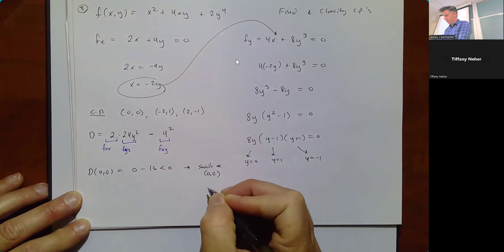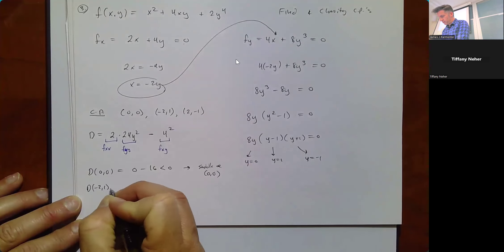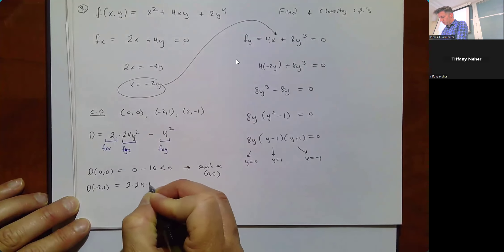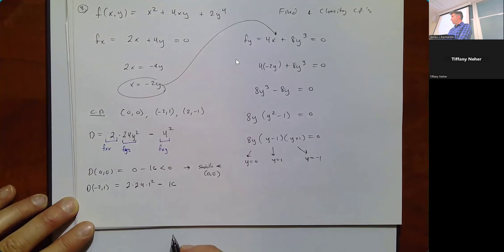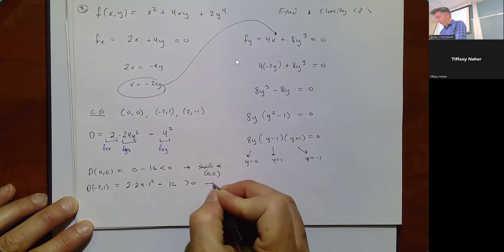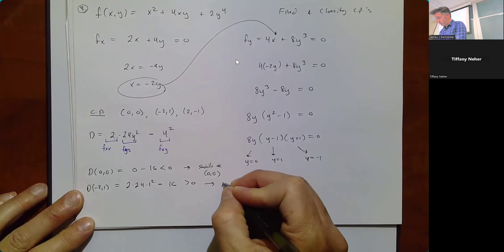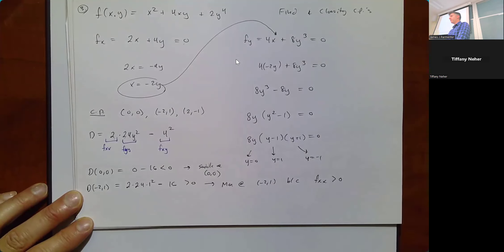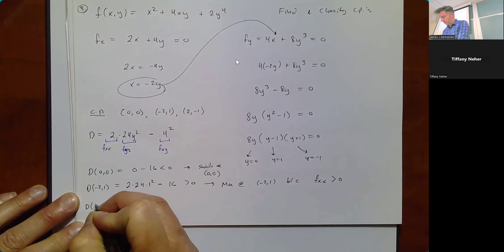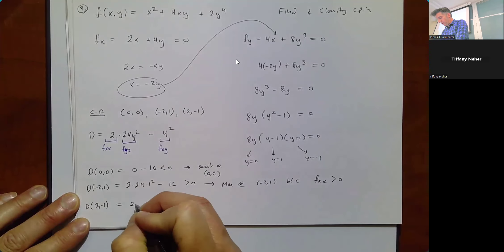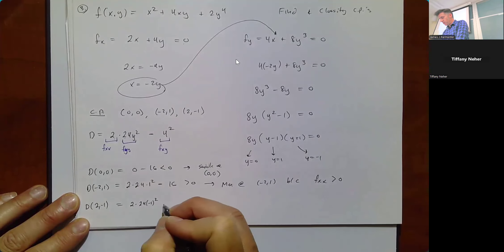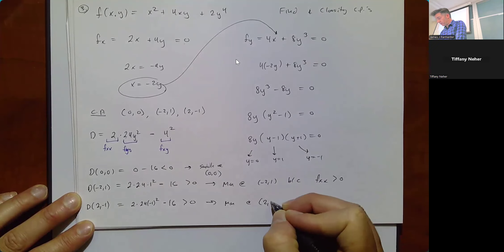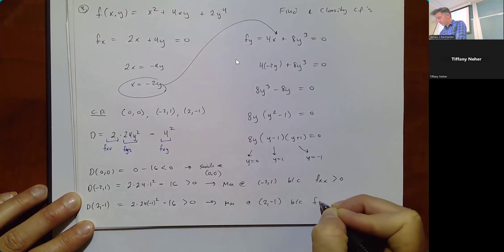At (-2, 1): D = 2(24)(1²) - 16 = 48 - 16 = 32, which is positive. Since fxx = 2 is positive (concave up), we have a minimum at (-2, 1). At (2, -1): D = 2(24)((-1)²) - 16 = 32, also positive. We still have a minimum because fxx is still positive.